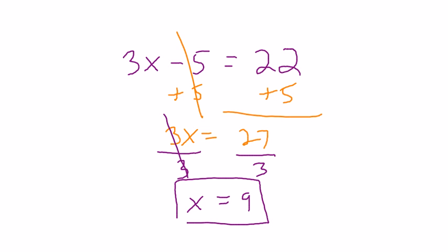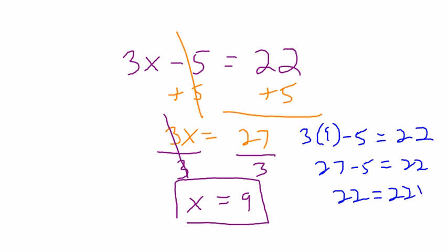We will now check to make sure that we are correct. And we will do that by plugging in our solution to our original equation. 3 times, instead of x, 9. 3 times 9 minus 5 should equal 22, if our solution is correct. Using order of operations, 3 times 9 is 27. Then 27 minus 5 does give us 22. So our solution checks out.